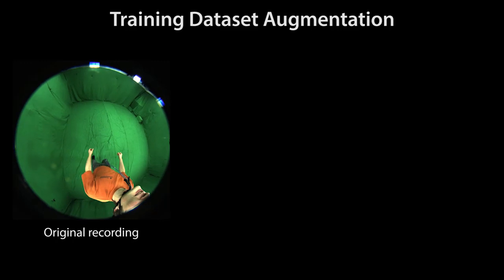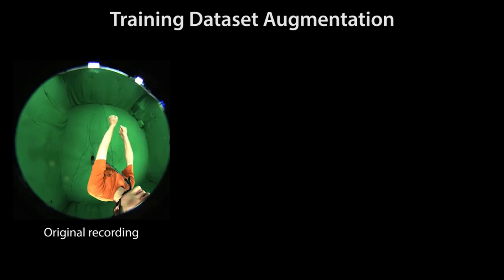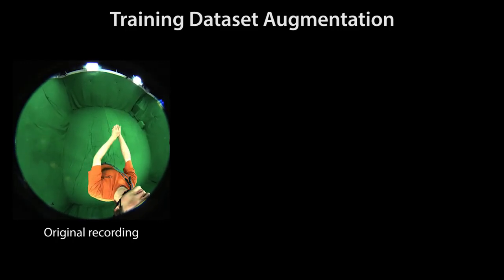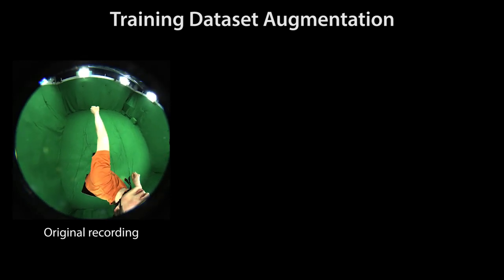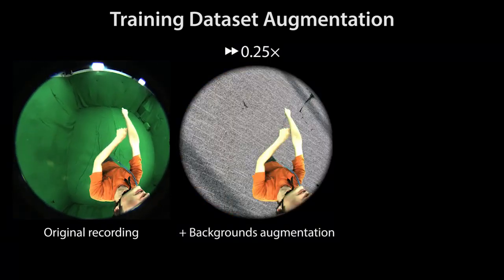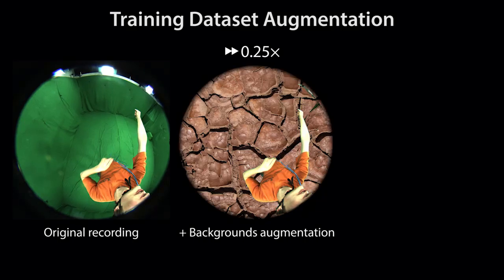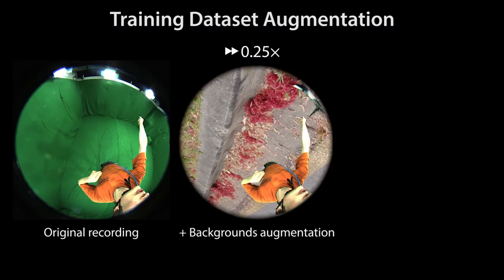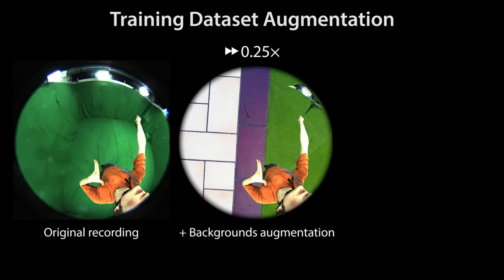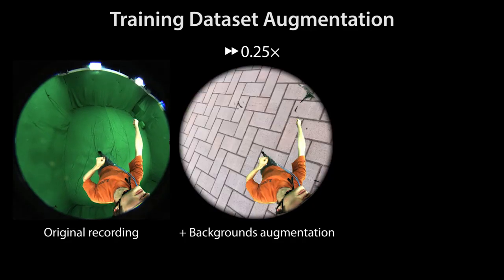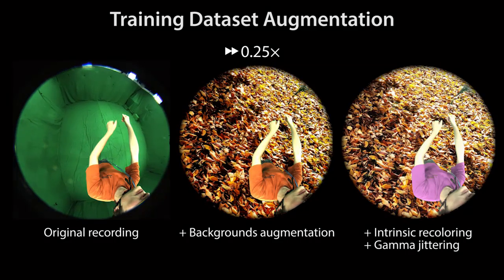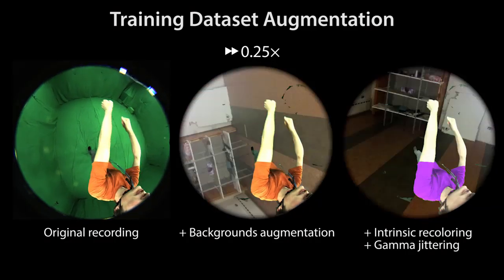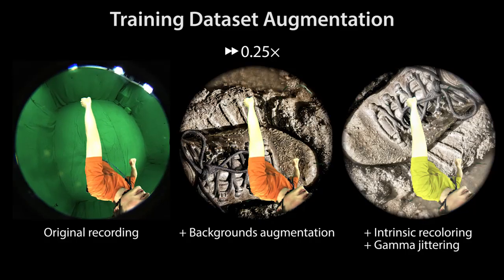We create a large training dataset for our body part detector by capturing actors in a state-of-the-art multi-view markerless motion capture system in a green screen studio. This allows us to replace backgrounds to augment the dataset and provides ground truth joint location annotations from the motion capture system. In addition, we apply intrinsic recoloring and gamma jittering to make our detector more robust thanks to different clothing and lighting conditions.